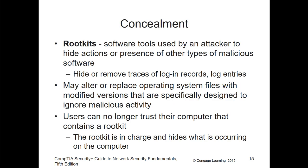A rootkit is software used by an attacker to hide actions or preserve the presence of other types of malware. It will conceal itself inside of an executable. A very common example is Internet Explorer getting hijacked — the rootkit hides in Internet Explorer, takes the executable, modifies it, and becomes it. When you open it, it still runs the executable but also performs other actions. It may alter or replace operating system files to remain hidden. Users can no longer trust a computer that contains a rootkit, because the rootkit could be any number of files on the system.